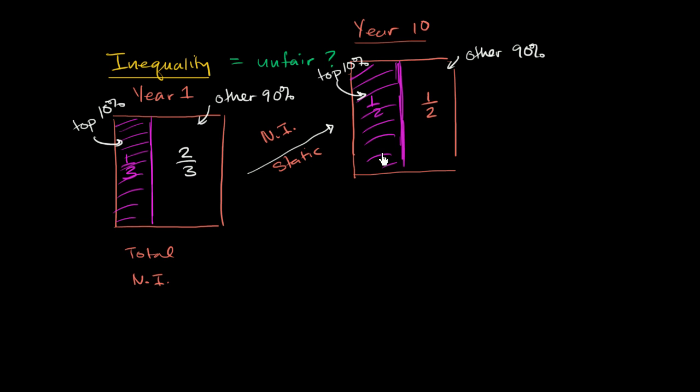But let's think of the other way, where you do have economic growth. Economic growth that's enough, so even if you have some inequality, the growth more than offsets that so the other 90% is still better off. Let's see if we can visualize that. Economic growth.